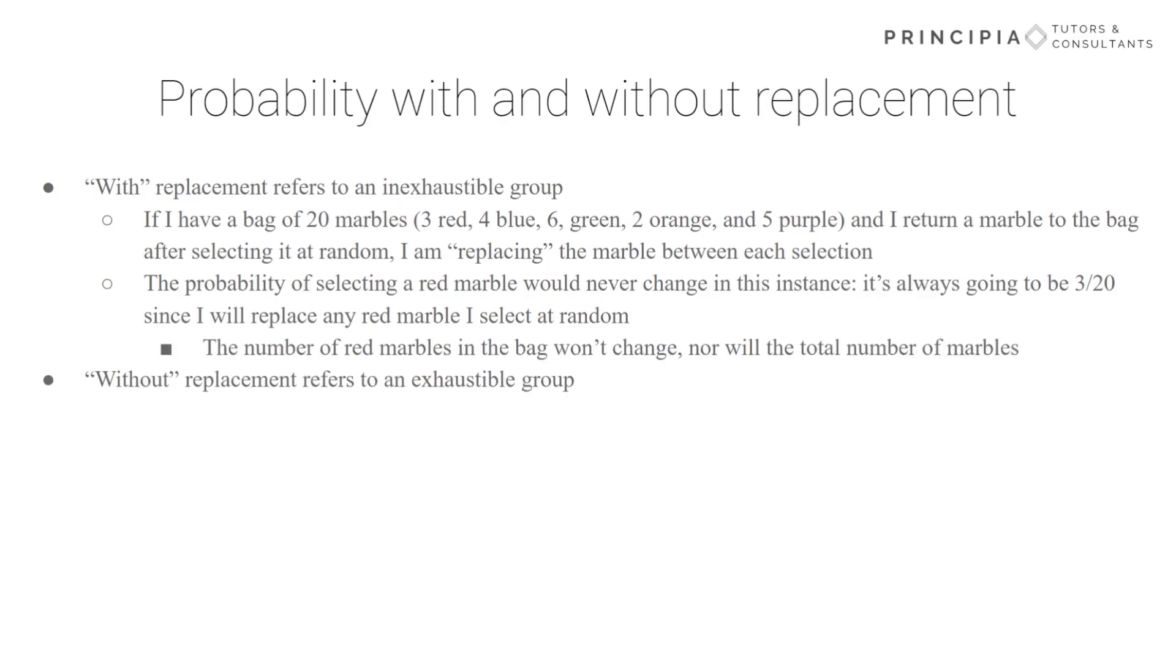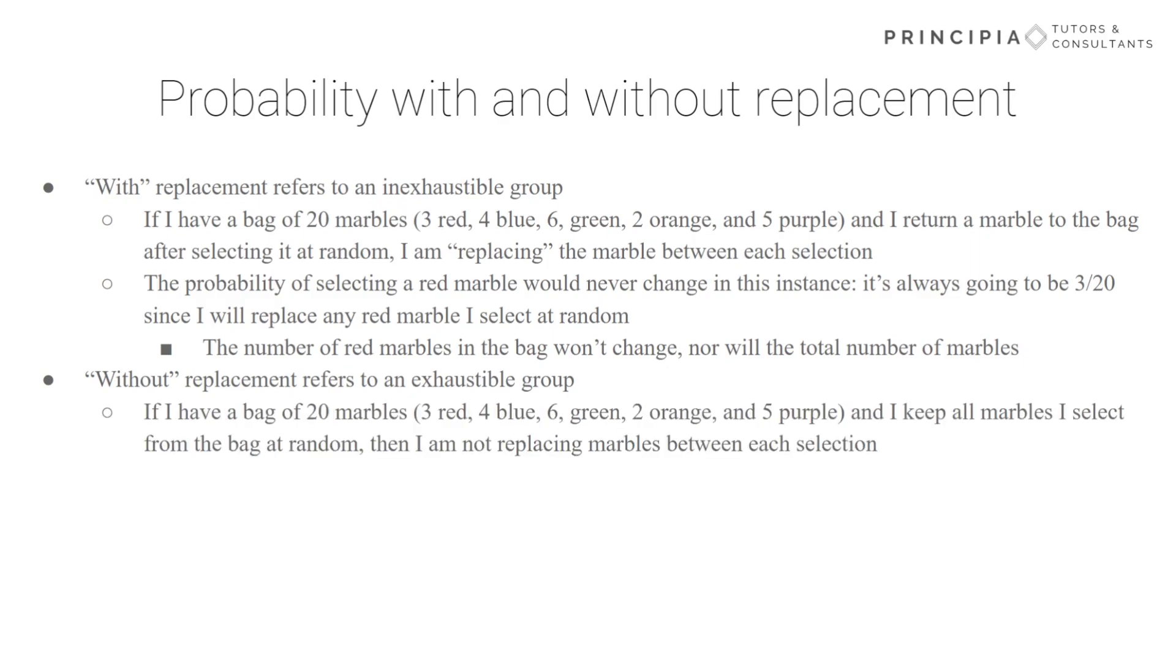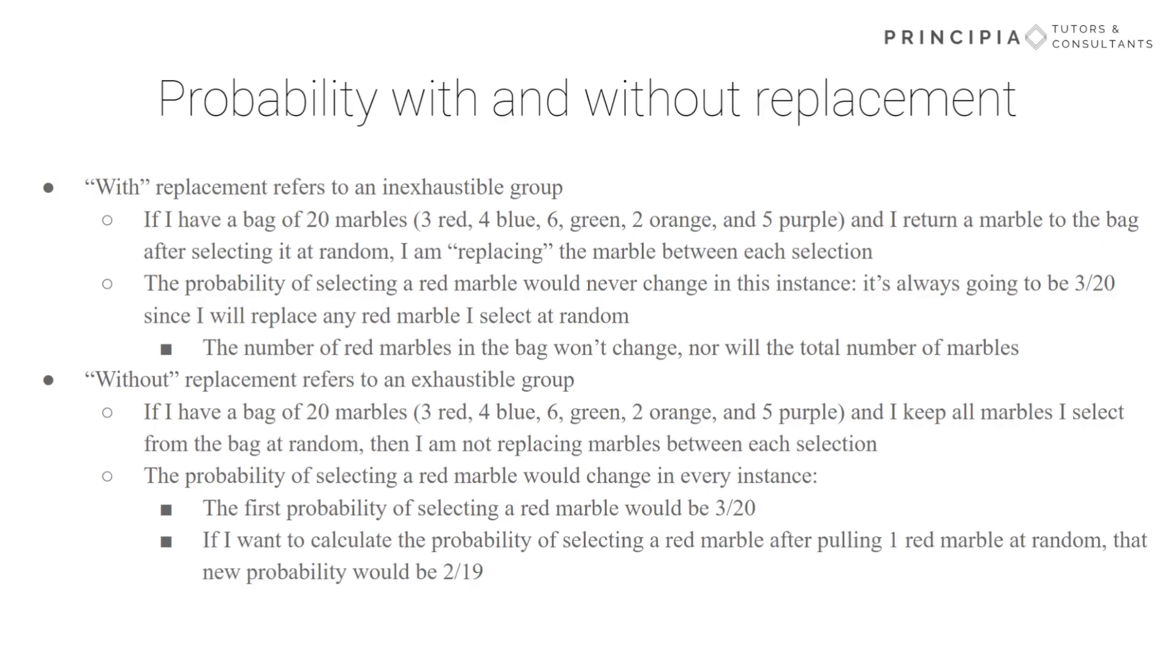Without replacement deals with an exhaustible group, which means as I draw marbles from the bag in this example and don't replace them, I am changing individual probabilities with each draw. So the first pull, again, is going to be 3 out of 20, but then with one less marble in the bag, one less red marble specifically in this instance, I would then only have a 2 out of 19 chance of drawing a red marble. And this would reduce until after drawing three marbles, there's just no likelihood of me pulling it. As you draw more and more marbles, you're reducing both the total number of marbles and the individual number of specifically colored marbles.